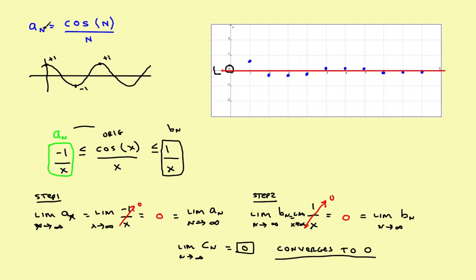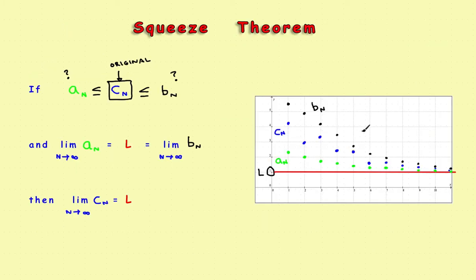To summarize: if you want to show a sequence converges, find a sequence that stays above it and one that stays below it. Using the squeeze theorem, show the limit of the lower sequence is L and the limit of the upper sequence is L — and therefore the overall limit is also L.